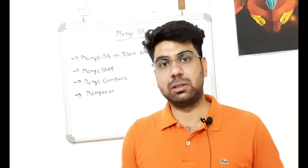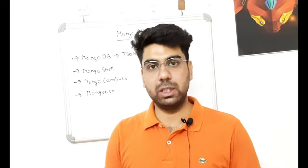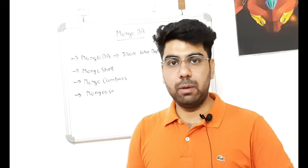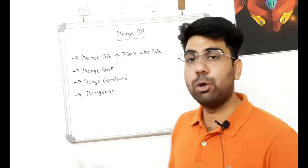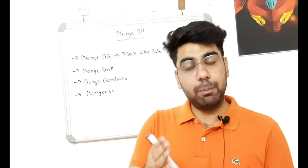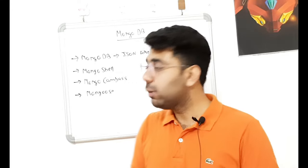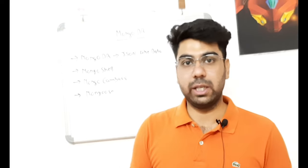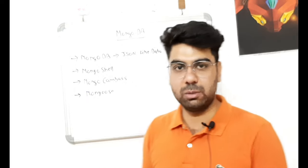We can write all commands — create, read, insert — whatever our CRUD operations are for our database. Third is Mongo Compass. If we want a GUI — Graphical User Interface — then Mongo Compass provides that, where we can see our data, create our data, add our data. It's a full GUI where we can create, read, or delete. So Mongo Compass is GUI, Mongo Shell is command-line — you can understand the difference.